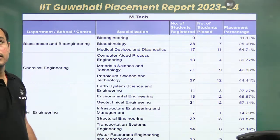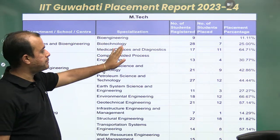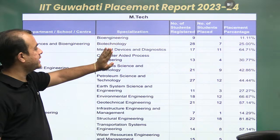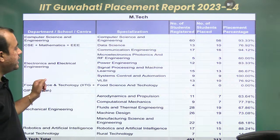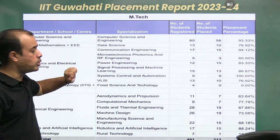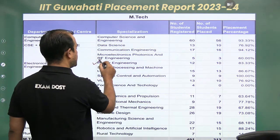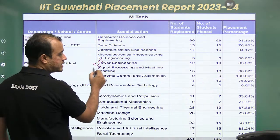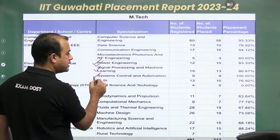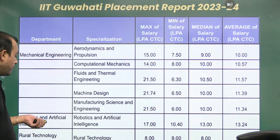Regarding placements — in Biotech, 25% of students were placed. In Bioengineering, 11%. Medical Science Devices, 64%. In Electrical and Electronics: Communication Engineering 94%, Microelectronics 60%, Power Engineering 83%, Signal Processing 86%, System Control 100%, and VLSI 77%. The placement percentage is very good from IIT Guwahati in Electrical and Electronics.